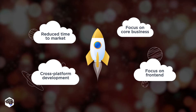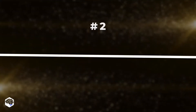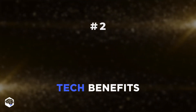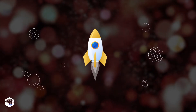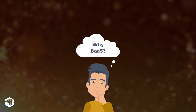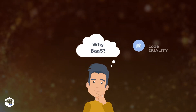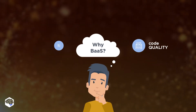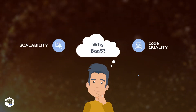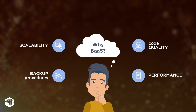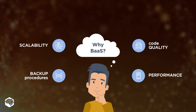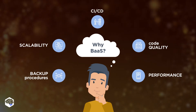The second group is tech benefits. Among the parts of app development that can be automated using the BAS model are code quality, scalability, performance, out-of-the-box backup procedures, and continuous delivery and integration.